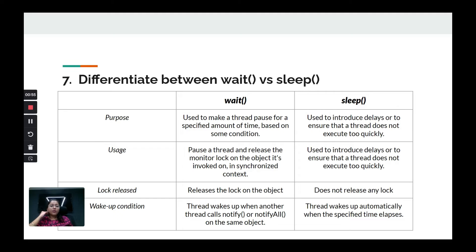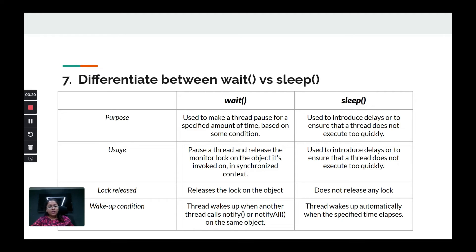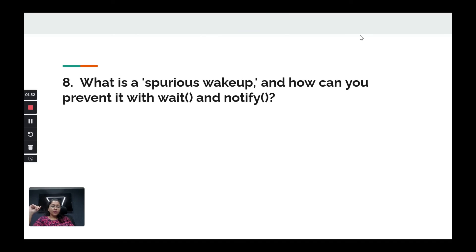The important difference is what happens to the lock. When a thread invokes wait, it releases the lock it was holding — as seen in the producer-consumer problem where the producer releases the lock so the consumer can acquire it. But with sleep, the lock is not released, so all threads waiting for that lock are blocked until the sleep completes. Also, a waiting thread wakes up via notify or notifyAll, while a sleeping thread wakes up after the specified time has elapsed — there is no notification mechanism for sleep.